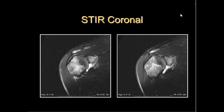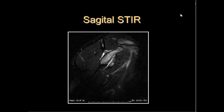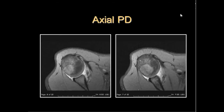On the axial images, you really don't visualize the anterior labrum. You have some kind of amalgam of tissue here, which is probably partly anterior labrum and periosteum. This is a Hill-Sachs deformity and anterior labral tear, or a Bankart lesion.